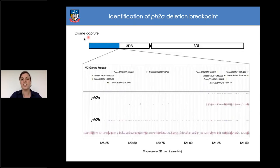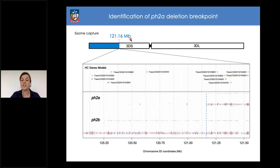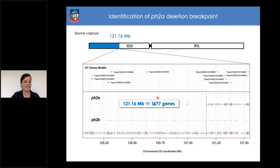To verify the deletion extension, we performed exome capture of the PH2a mutant in Adelaide. On the terminal part of chromosome 3D, the PH2a mutant showed no signal, starting only from position 121.16 megabases — while PH2b and wild-type had signal across the entire 3D chromosome. This deletion is approximately the size of the Arabidopsis genome. Using the wheat reference genome, we identified exactly 1,577 genes as potential candidates for PH2.